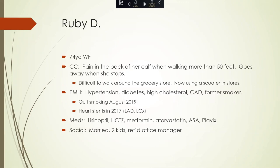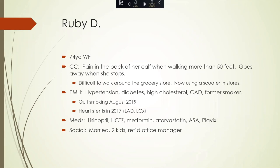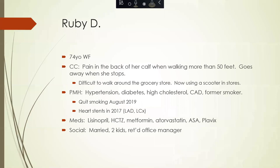Now we'll go over a case of Ruby D., a 74-year-old white female who had complaints of pain in her calf when walking more than 50 feet. When she stopped walking, the pain resolved, but this began to affect her daily life — she couldn't walk around the grocery store without pain and had to use a scooter. Her past medical history includes high blood pressure, diabetes, high cholesterol, coronary disease with heart stents placed four years ago, and she used to smoke but quit in 2019.